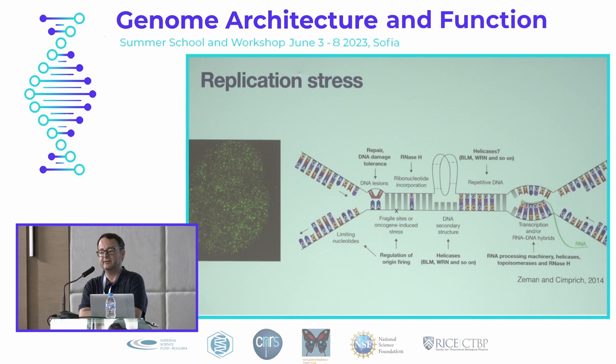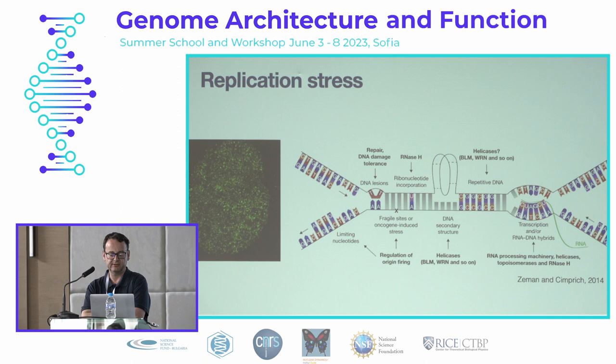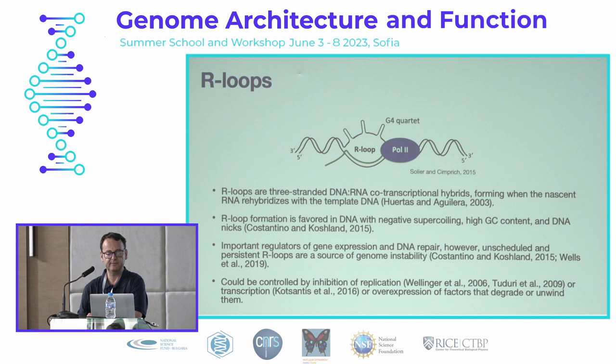During S-phase, the cell has to synthesize a tremendous amount of DNA despite multiple factors that try to stop replication forks. One of these factors is transcription, and specifically R-loops, which are co-transcriptional structures shown time and again to be a block to DNA replication.